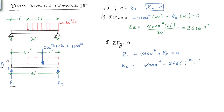which is equal to 1,333.3 pounds. So RL is equal to 1,333.3 pounds, RR is 2,666.7 pounds.